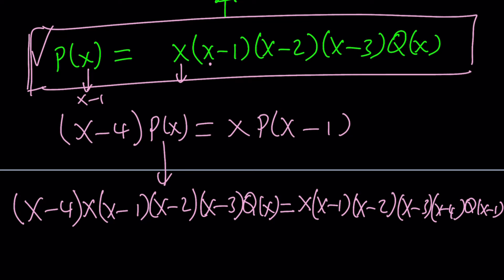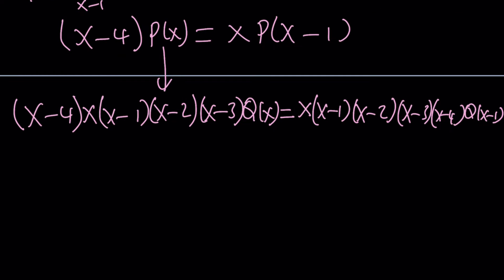But guess what? We got Q of X and Q of X minus 1. How do we find it from here? Well, here's something that's amazing.